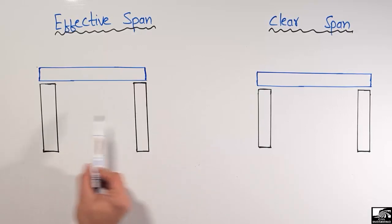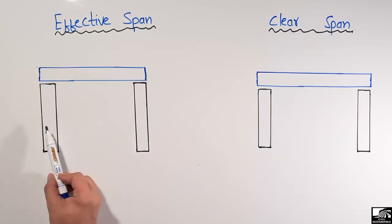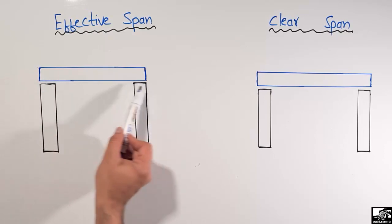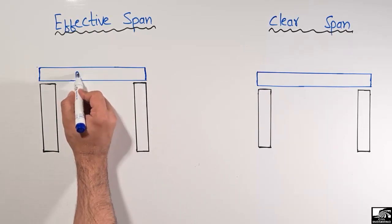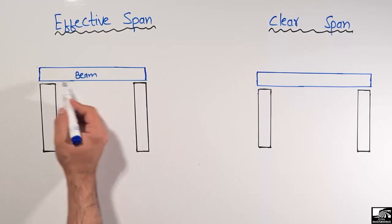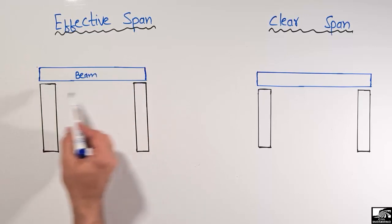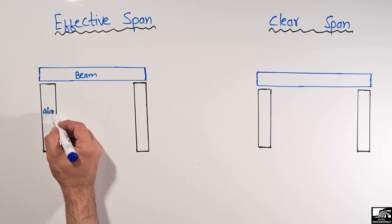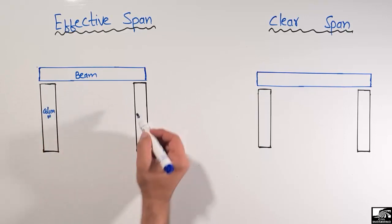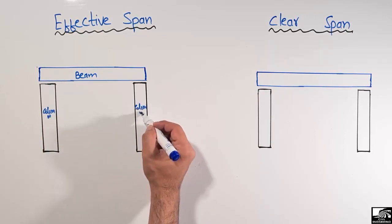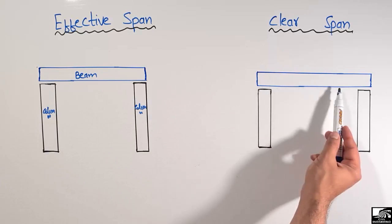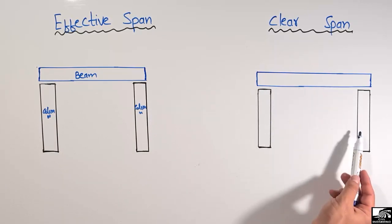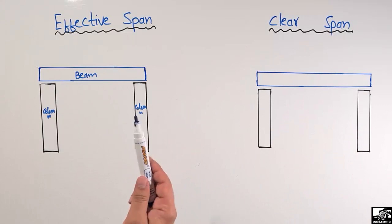Let's consider these two columns, or we can say two supports, provided to support this beam. So this is a horizontal beam member being supported on two columns. In a similar way, this is a beam supported by two supports or two columns.